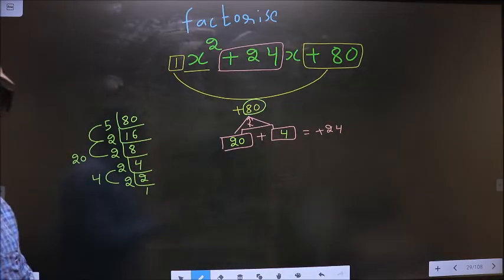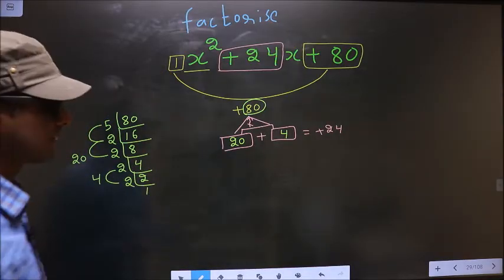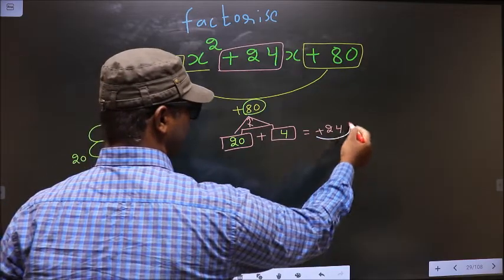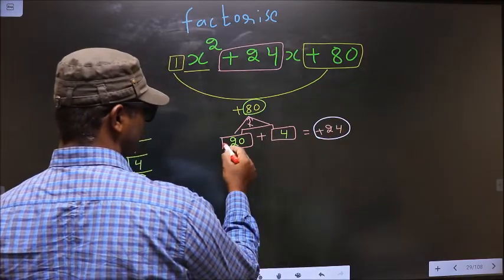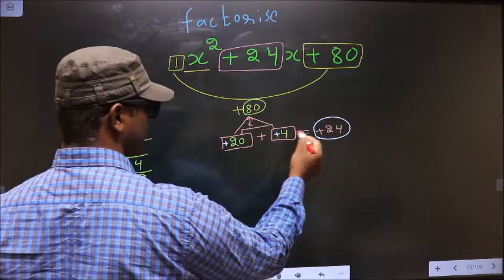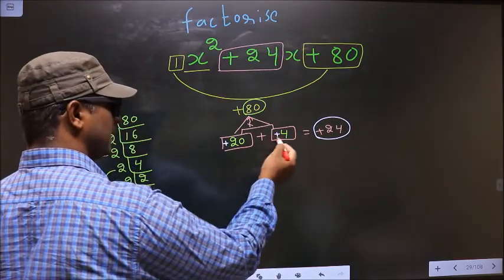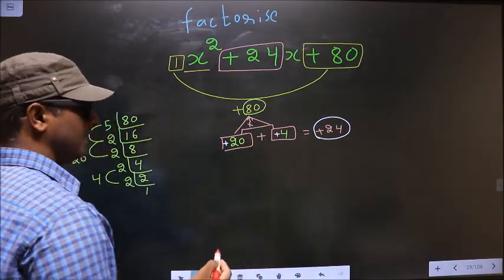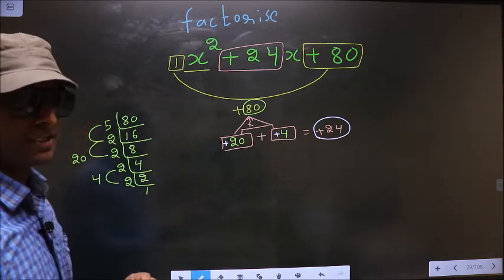Now we should adjust the signs. Here I should get plus 24. So plus 20 plus 4 is plus 24. Plus 20 into plus 4 is plus 80. So we have adjusted the signs.